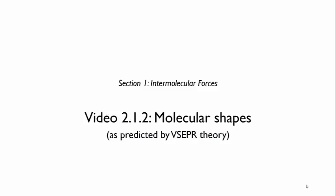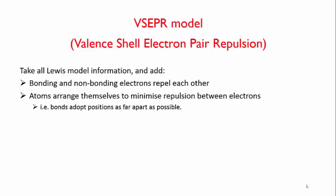In this video, we're going to learn to use VSEPR theory to predict the shapes of some molecules. Remember that the key feature of VSEPR is that it says that bonding electron pairs and lone pairs repel, so the molecule will try to arrange itself so that the electrons are as far apart as possible.